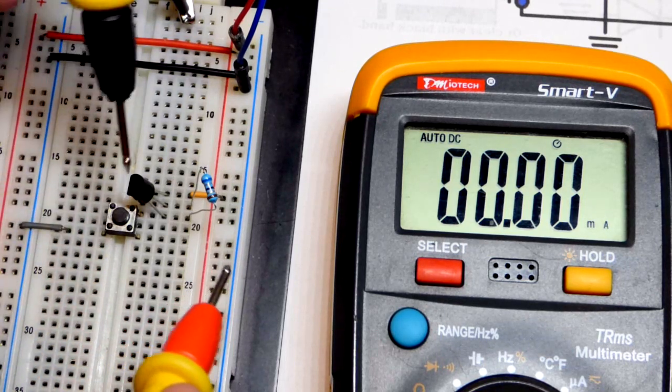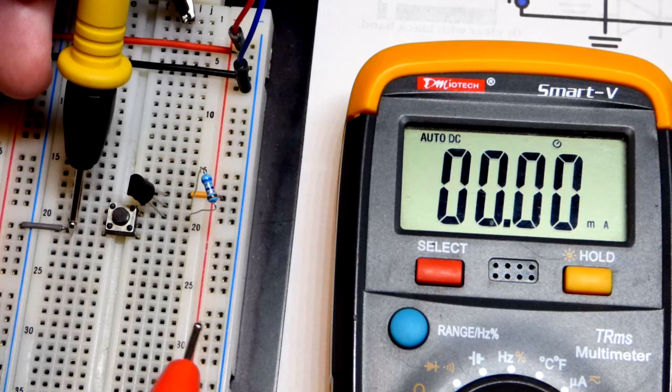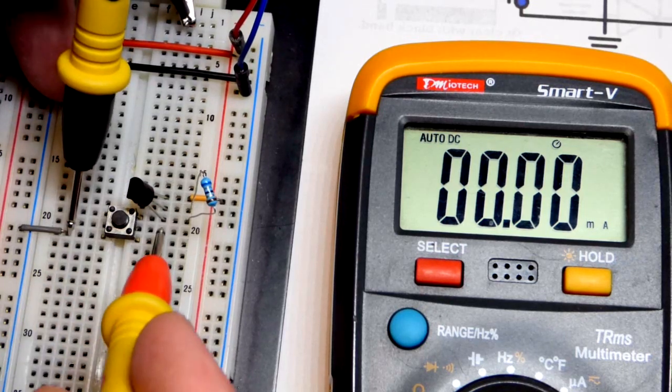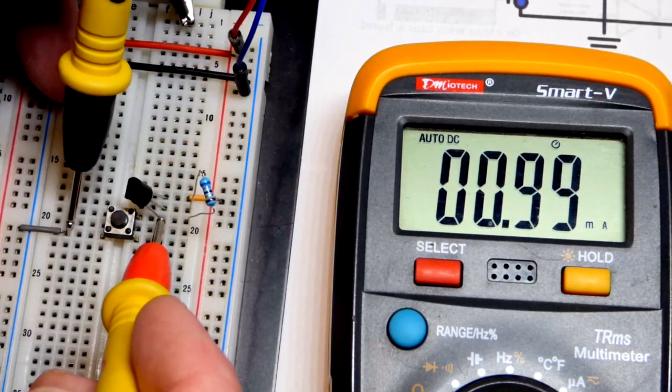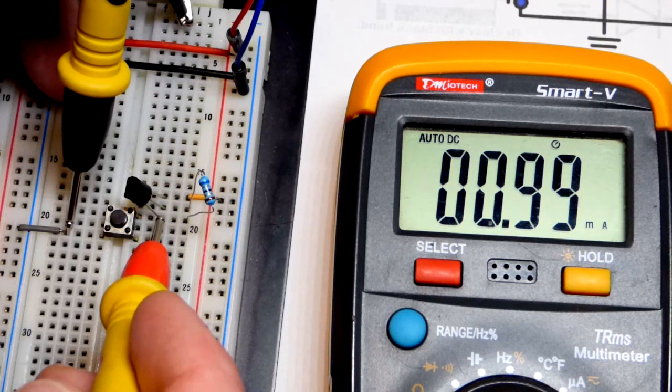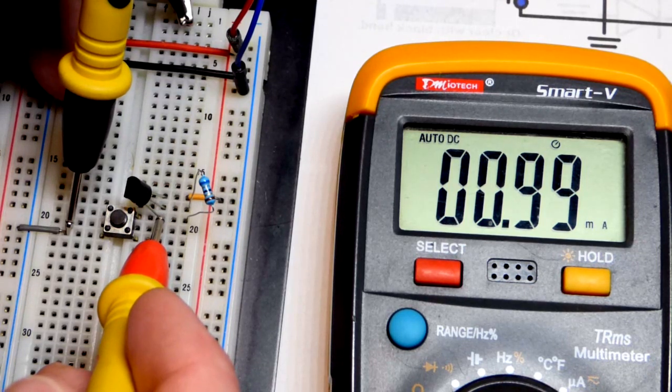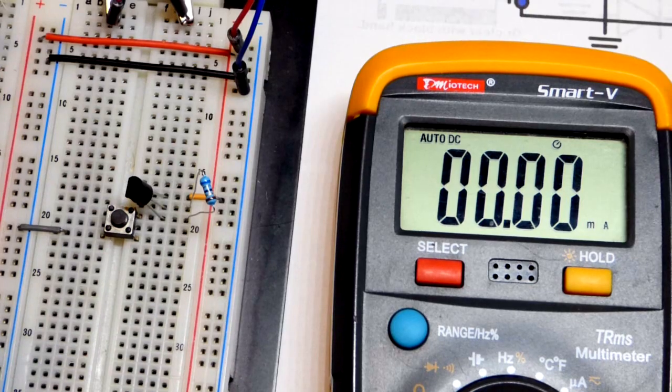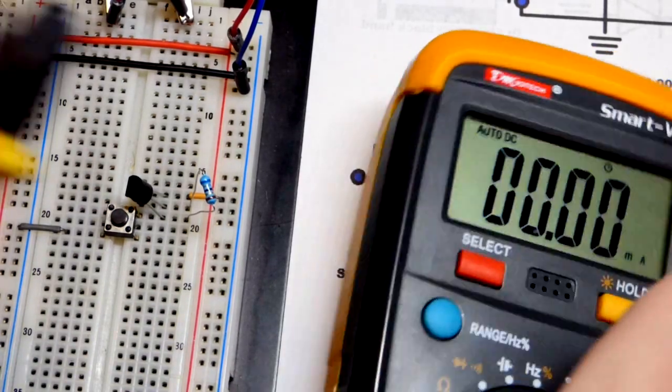So instead of pushing the button to get current to flow through it we can use the probes of the multimeter. So this connects directly to the bottom, that connects directly to the top, and there you can see we have 1 milliamp of current pretty much spot on. So not exact but we're not dealing with exact right here.